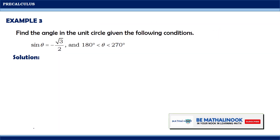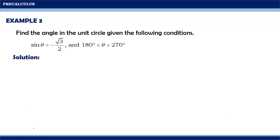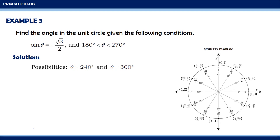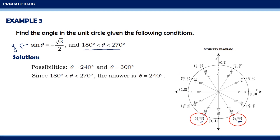Let us have another example. Find the angle in the unit circle given: sin θ = −√3/2, and θ is greater than 180 degrees but less than 270 degrees. Since sine equals the y-coordinate, the possible angles with y = −√3/2 are 240 degrees and 300 degrees. But since θ must be greater than 180° and less than 270°, the answer is 240 degrees.